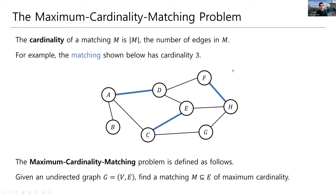And the maximum cardinality matching problem is exactly as you might expect. Given an undirected graph G, our job is to find a matching that is of maximum cardinality. It has as many edges in it as possible.